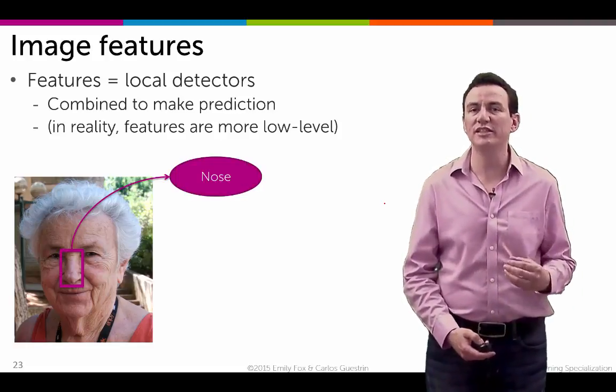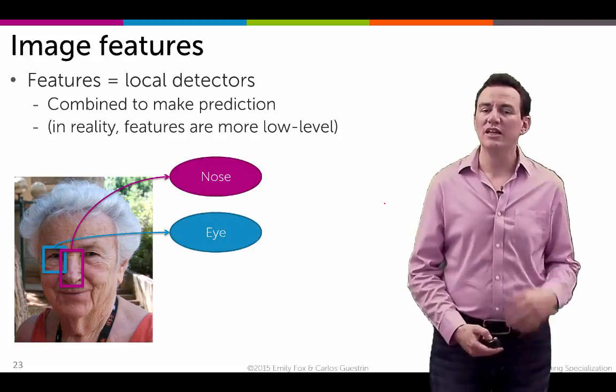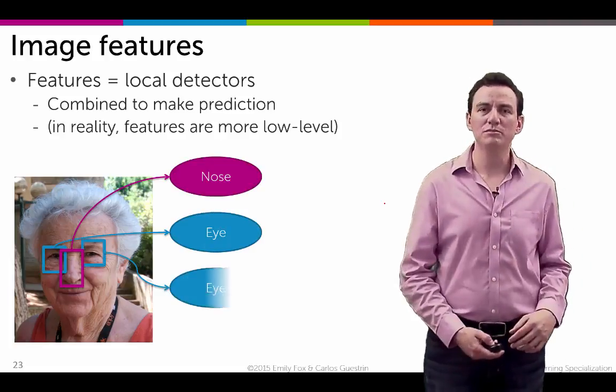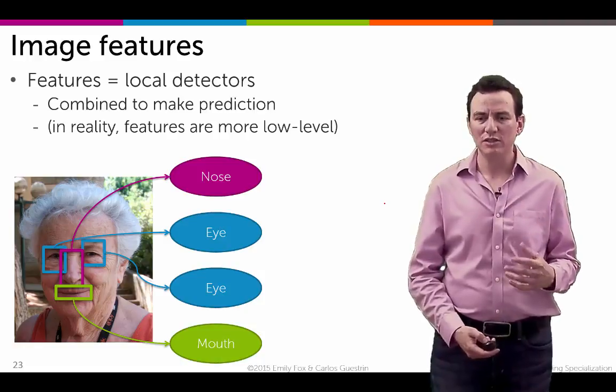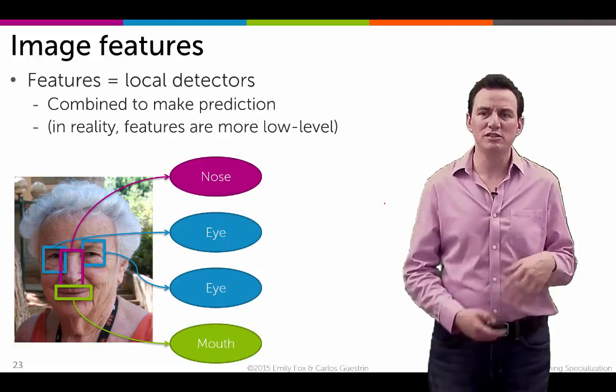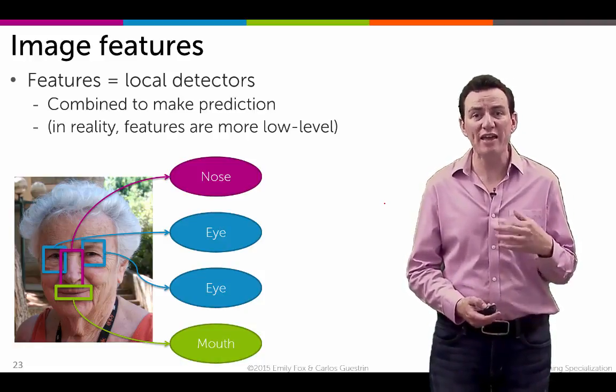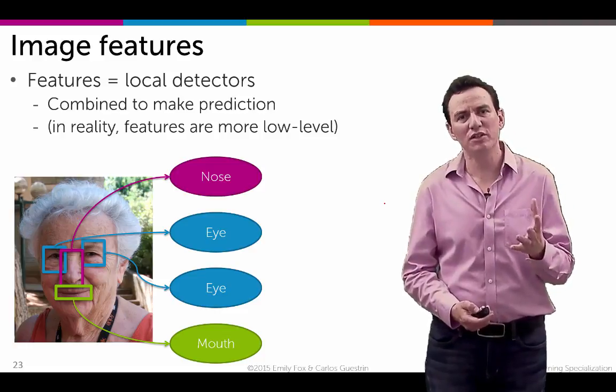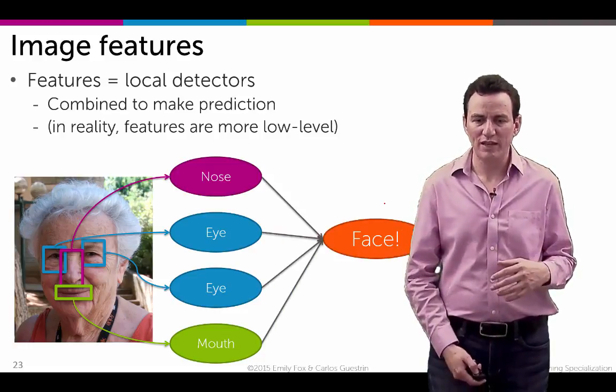I run a little detector, let's say a nose detector, eye detector, another eye detector, a mouth detector, and if all of these fire, using a little neural network you can say this is a face and that's our prediction.